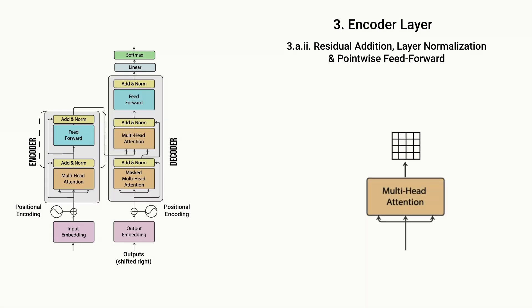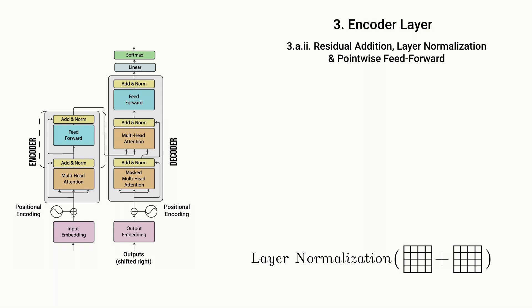Once the multi-head attention computation is done, a residual connection is added to its output, which means that we simply add the input of the layer together with the output of the layer to allow gradients to flow through the network directly without having to pass through non-linear functions. And layer normalization is then applied next, which means that we just compute the mean and standard deviation of the output and use this to normalize the output values, which helps stabilize the network and speed up training time.